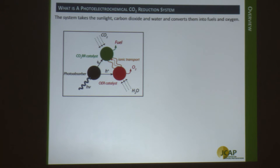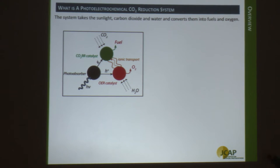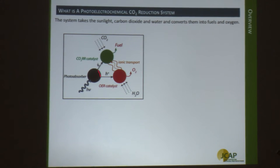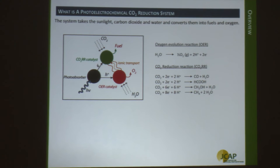What is a PEC CO2R system? The system takes sunlight, water, and CO2, and generates oxygen and fuels. One thing particularly relevant to this workshop is that water is really the proton source. If your target fuel does not contain protons, such as carbon monoxide, the water is optional for the whole system. The system has a photoabsorber that captures the sunlight and generates photogenerated electron-hole pairs, transporting them to the reaction sites.